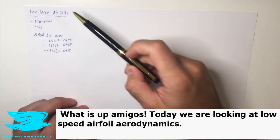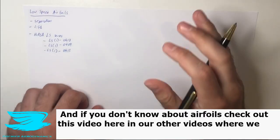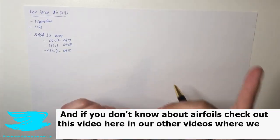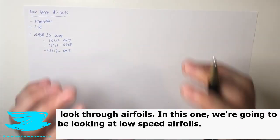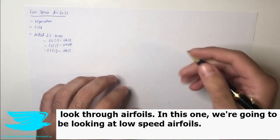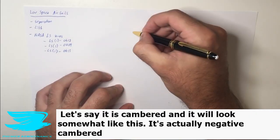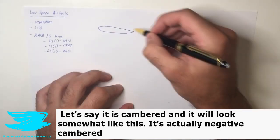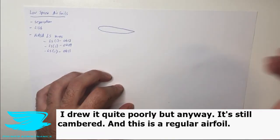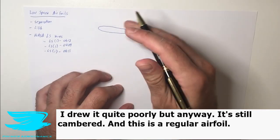What is up amigos, today we're looking at low speed airfoil aerodynamics. If you don't know about airfoils, check out this video here in our other videos where we look through airfoils. In this one we're going to be looking at low speed. So a regular airfoil, let's say it is cambered and it will look somewhat like this. It's actually negative cambered, I drew that quite poorly but anyway it's still cambered and this is the regular airfoil.